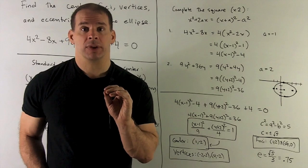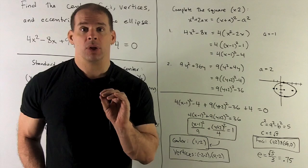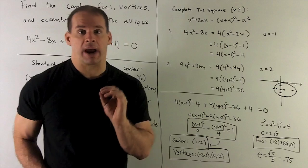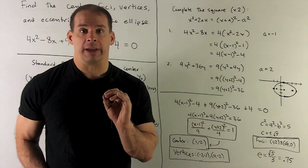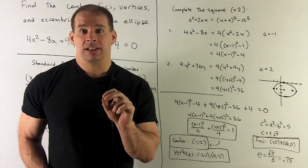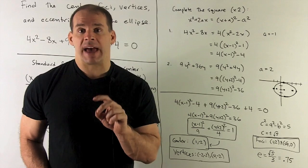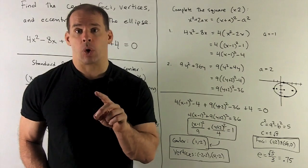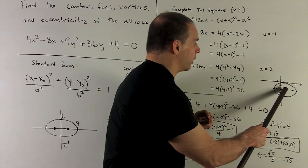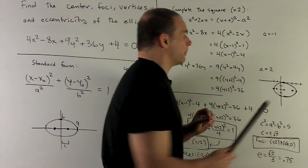Next, the vertices. We need to figure out if we're longer in x or in y. Take a look at our denominators. 9 is bigger than 4. So, 9 is going to be equal to a². So, our a = 3. To get my vertices, I take our center, take the x value, add and subtract 3 from it. So, our new x values are going to be -2 and 4. We're going to have vertices at (-2, -2) and at (4, -2).